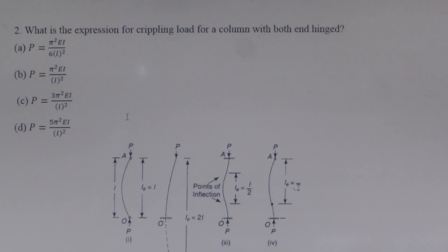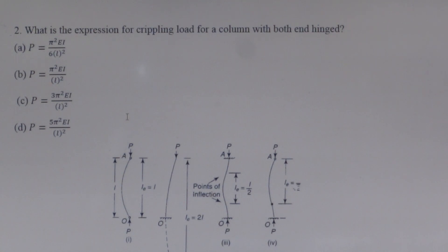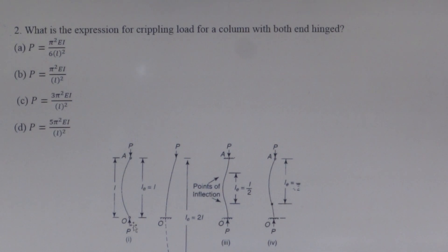Question number 2: What is the expression for crippling load for a column with both ends hinged? The load carrying capacity of a column depends upon the end condition of the column. When both ends of the column are hinged, the load carrying capacity is equal to π²EI upon L².